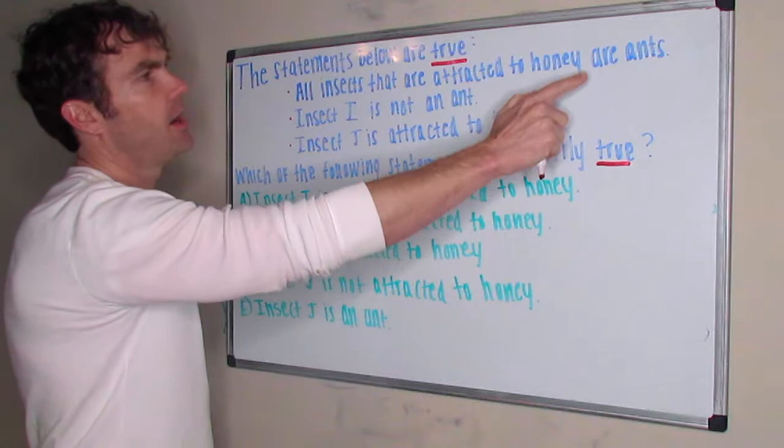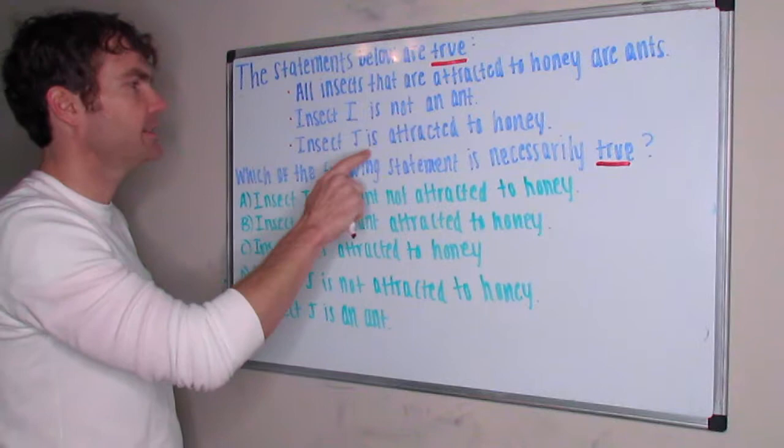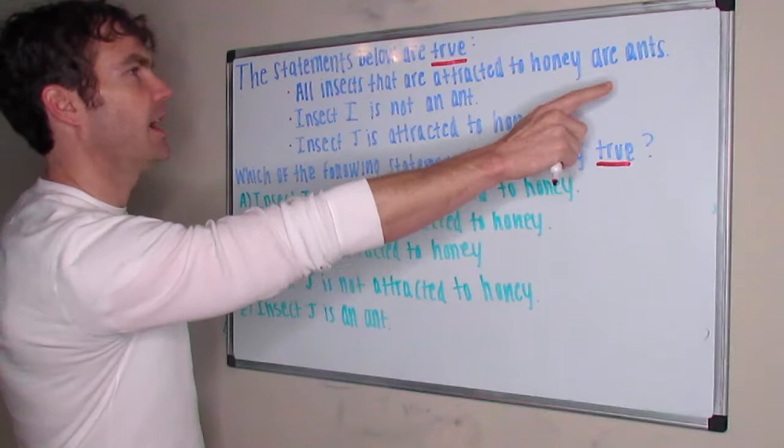If you're not attracted to honey, you're not an ant—things like that. Insect I is not an ant. Insect J is attracted to honey. So when I first looked through this I said, J is attracted to honey, and all insects that are attracted to honey are ants, then J must be an ant. That's one possible answer that was in my mind.